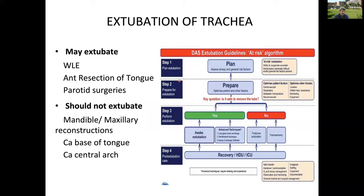Once surgery is done, extubation is another big challenge — it was a difficult intubation to start with and can be an even more difficult extubation to end with. We may eventually extubate if it is a small wide local excision, small anterior tongue section, or corrective surgeries. However, for surgeries involving mandible, maxillary reconstruction, base of tongue, or central arch, we suggest delayed extubation. Follow DAS or similar guidelines: identify the risk extubation category, prepare and optimize cardiovascular, respiratory, metabolic and neuromuscular factors, then decide on the method — awake extubation, tracheostomy, postponed extubation, or advanced techniques.